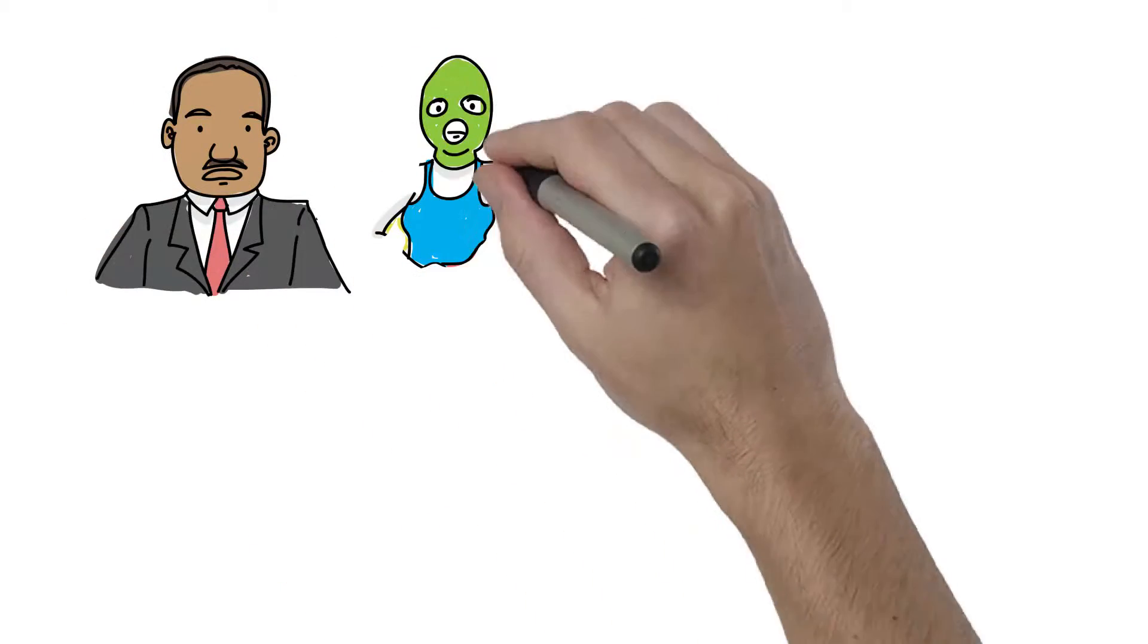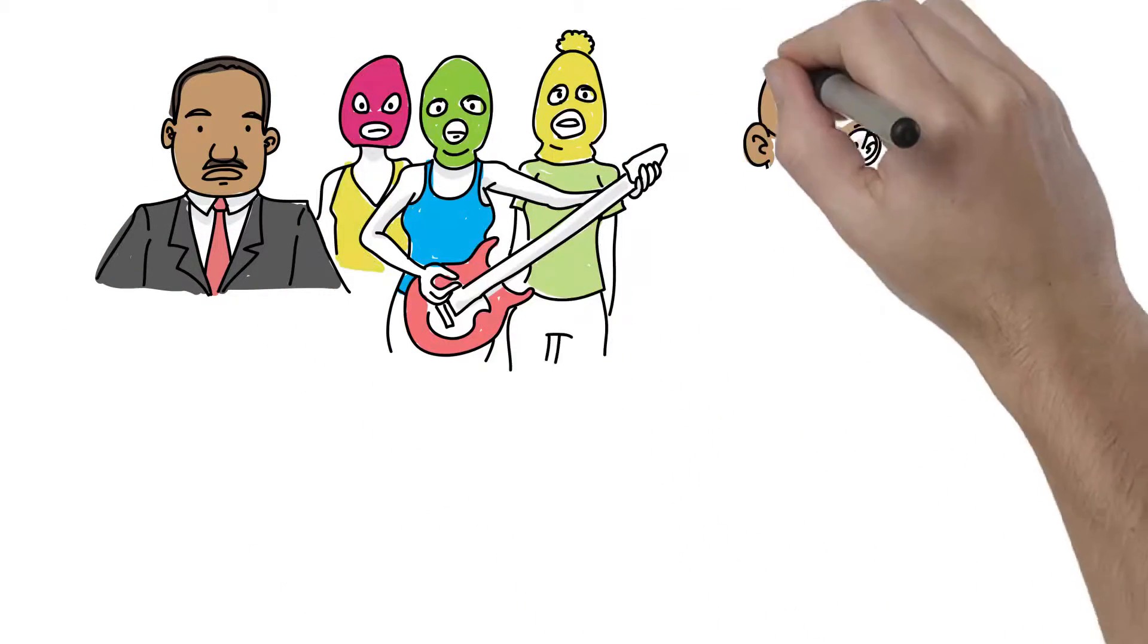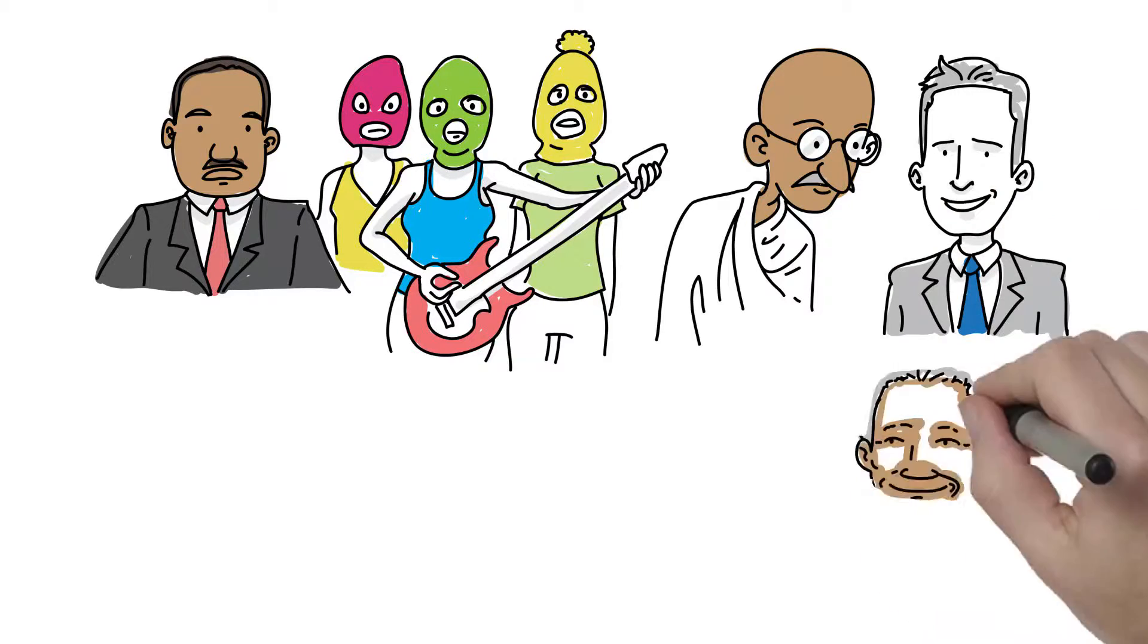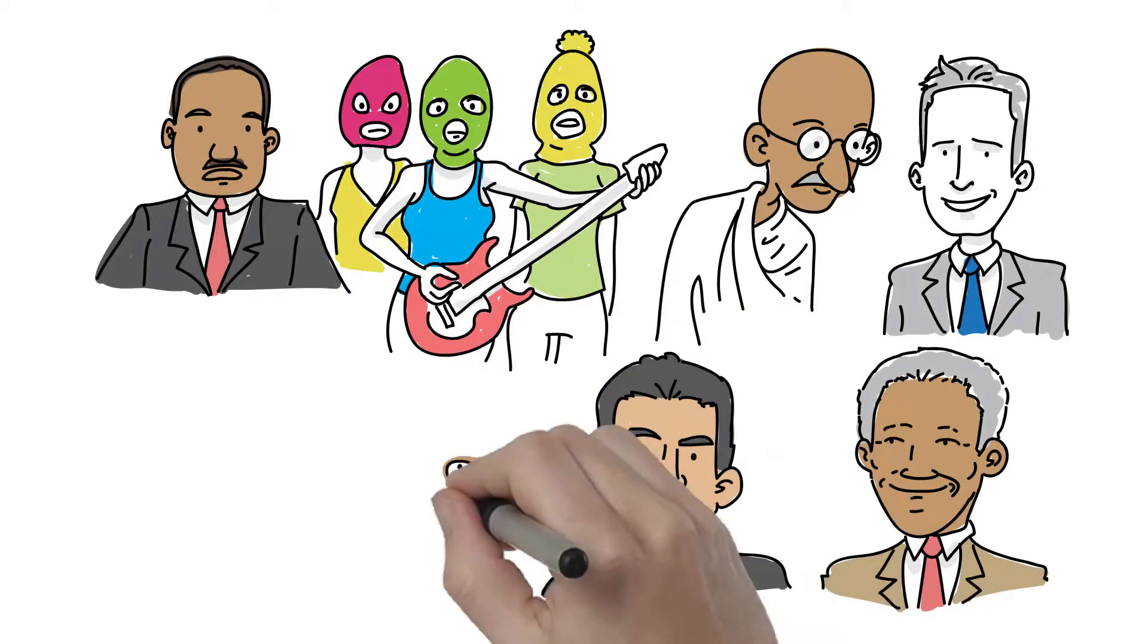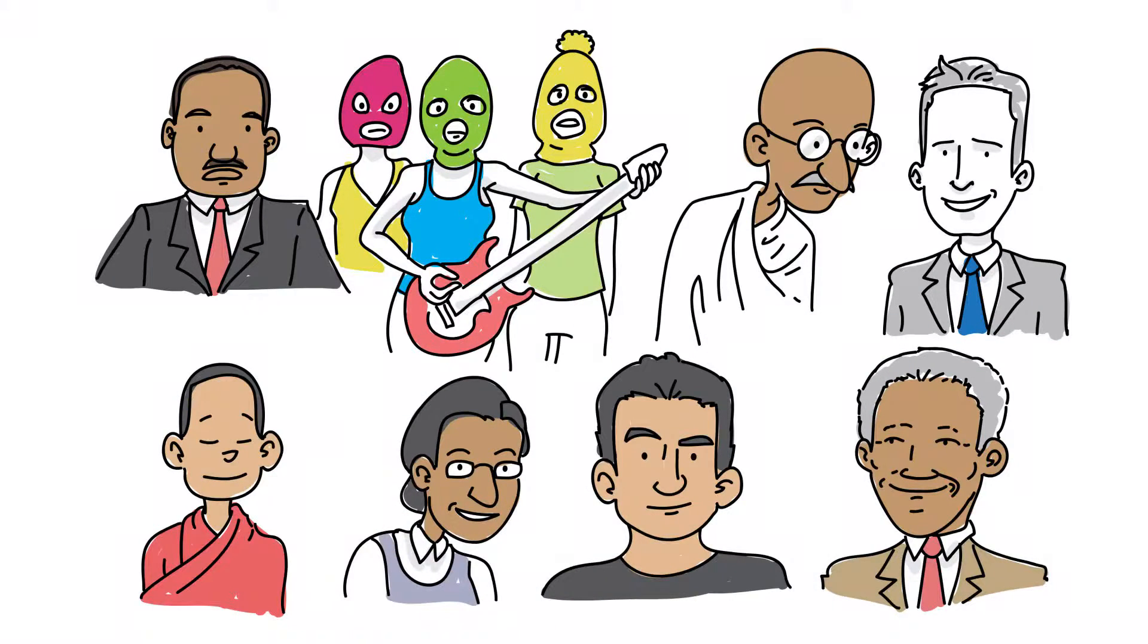Martin Luther King Jr., Pussy Riot, Gandhi, John Stewart, Nelson Mandela, Basim Yosef, Rosa Parks, Monks in Burma. What do all of these people have in common?